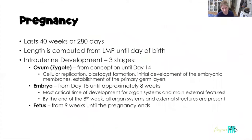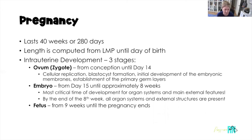Pregnancy lasts for 40 weeks or approximately 280 days, calculated from the first day of the last menstrual period. We know ovulation takes place roughly two weeks after the first day of the last menstrual period, but due dates are calculated from that first day. Intrauterine development goes through three stages. The first is the ovum stage, sometimes called the zygote stage — from conception until day 14. In this stage, cellular replication occurs, the blastocyst forms and implants, embryonic membranes begin to develop, and we get the establishment of the primary germ layers: the ectoderm, the mesoderm, and the endoderm. All other structures arise from those three germ layers.